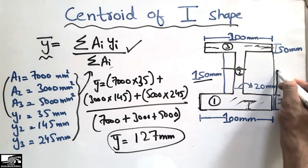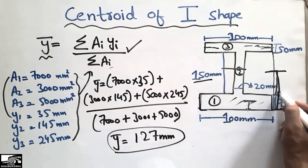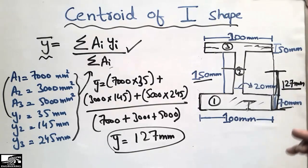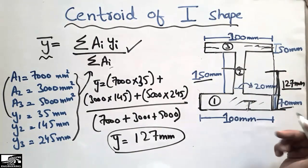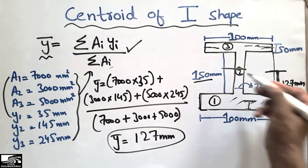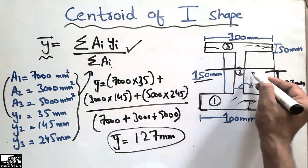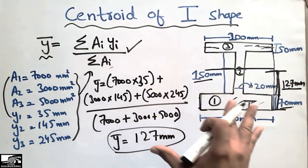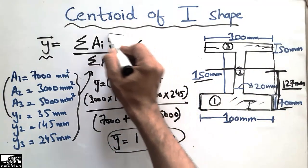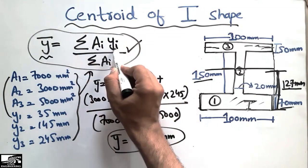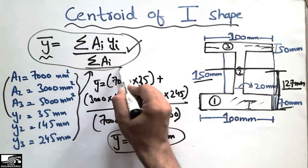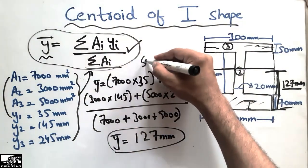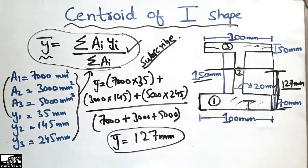So ȳ = 127 mm means the centroid of this shape is located 127 mm from the bottom. Measuring 127 mm from the bottom, we get the centroid of this shape, which lies somewhere in the web region. This is the method for finding the centroid — using the formula ΣAᵢyᵢ / ΣA, we get the centroid of any object. Don't forget to subscribe to our channel for more civil engineering videos. Thank you for watching.